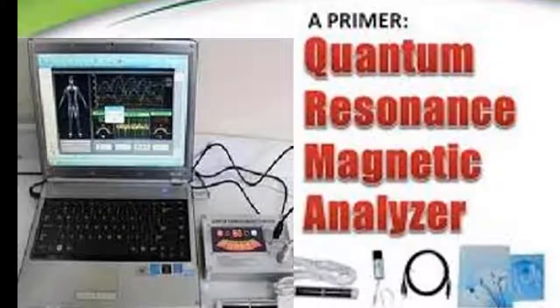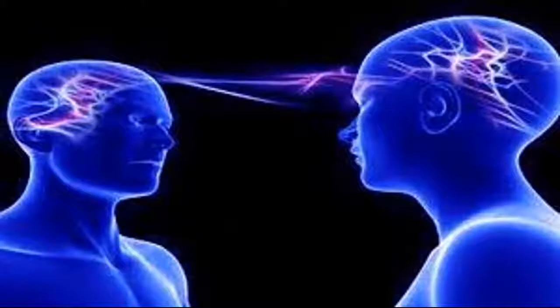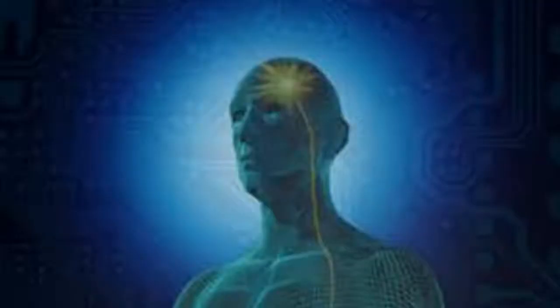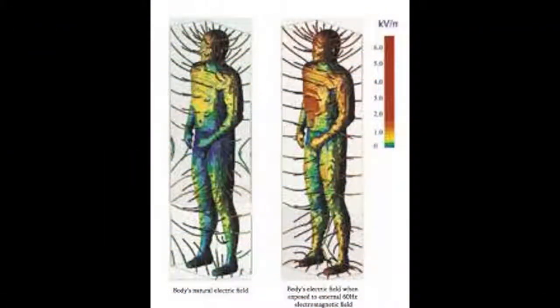The principle of quantum medicine using the quantum magnetic resonance analyzer works by collecting weak magnetic field or waves of the human cells, then analyzing them and determining a person's health status and problems. Quantum resonance theory is similar to that of radio — there are wireless waves in the air, but if you want to listen to a specific broadcasting station, you need to modulate the radio to the same frequency, causing resonance.